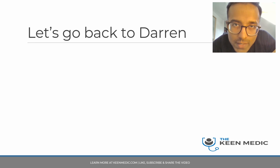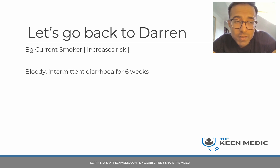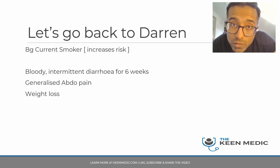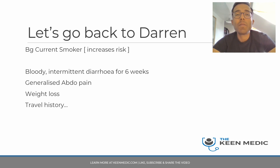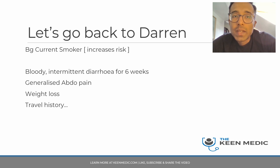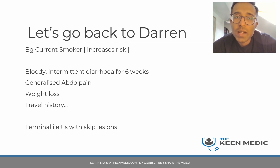Let's go back to Darren and look at what brought him in. He is a current smoker, which increases the risk of Crohn's disease — a well-recognised factor. He's had bloody intermittent diarrhea for six weeks with generalised abdominal pain and weight loss. In the context of smoking, this increases the likelihood of Crohn's. However, given his travel history, you would also need to look for infectious gastroenteritis and TB, sending off relevant blood tests and fecal samples. The CT showing terminal ileitis with skip lesions, combined with everything else, gives you the diagnosis of Crohn's disease. You would involve the gastroenterologists for endoscopy.